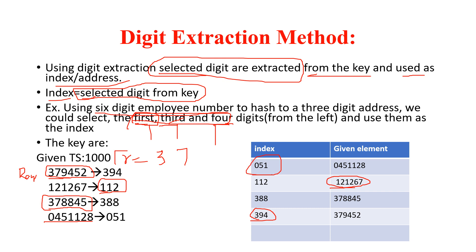So like that you can store the employee IDs in the database. The index is nothing but the first digit, third digit, and fourth digit. That's all about the digit extraction method. Thank you for watching.